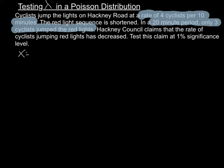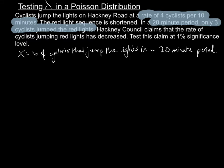We're going to define our random variable. X is the number of cyclists that jump the lights in a 20-minute period, because that's where we've got the observed value. We also need to state the distribution of X. X has a Poisson distribution with parameter lambda, because that is what we are testing.